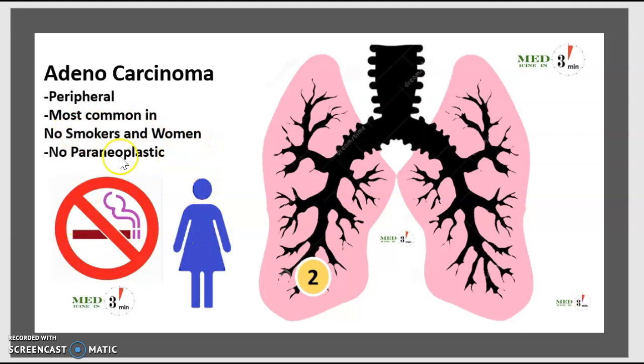The second category is adenocarcinoma. It is peripheral, most common in women, and has no link to smoking. It is actually not really considered a paraneoplastic syndrome.